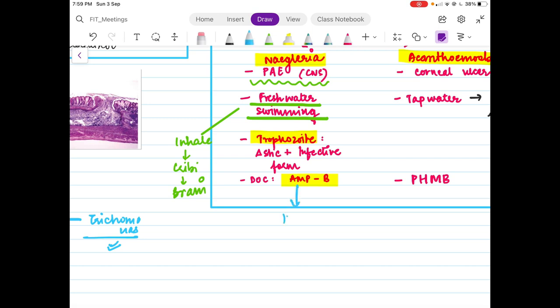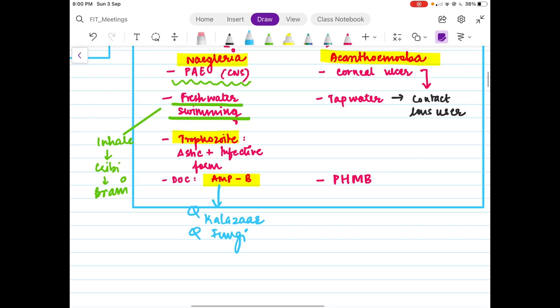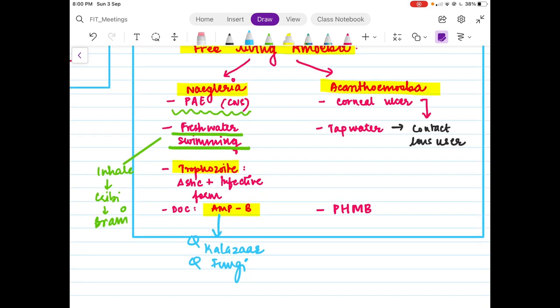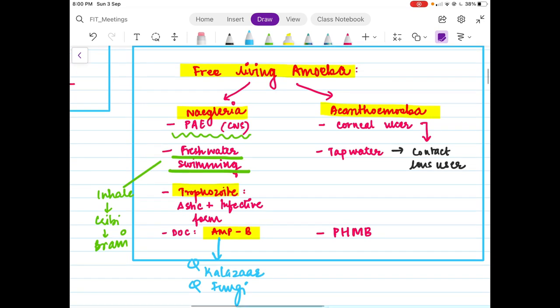Do also tell me amphotericin B is also the drug of choice for kala-azar, which is again a protozoa, along with fungi. Everybody knows the fungi, but another organism for which amphotericin B is used is Naegleria and kala-azar. Coming to Acanthamoeba, it causes corneal ulcer typically in contact lens users who have unhygienic practices like washing the contact lenses with tap water. The drug of choice is polyhexamethylene biguanide, its short form is PHMB.